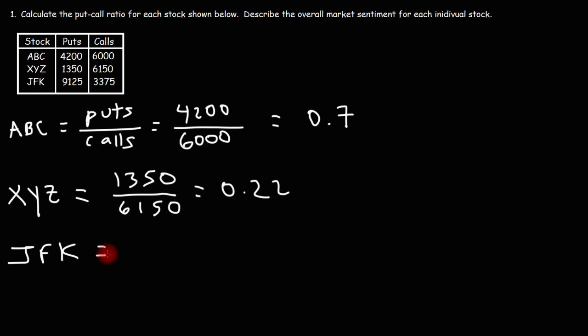Next, for JFK, we have a put volume of 9,125 and a call volume of 3,375. So this is 2.7.